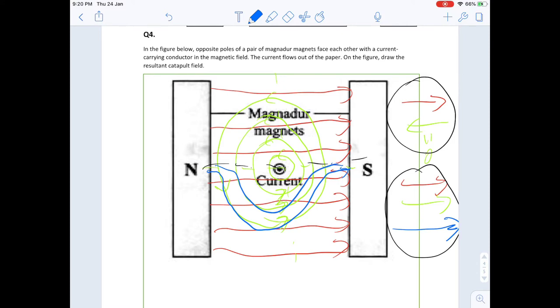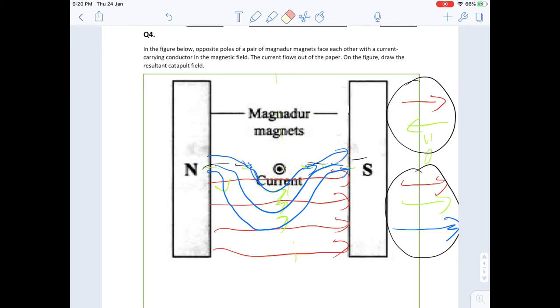When you combine both of them together, you'll only be left with the blue ones. I'm going to erase the red and the green. When you combine magnetic field lines, you'll be left with the final blue ones. This is called a catapult field.